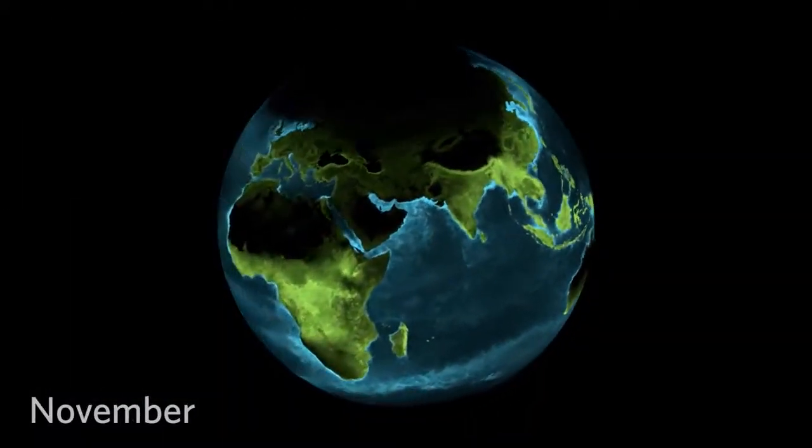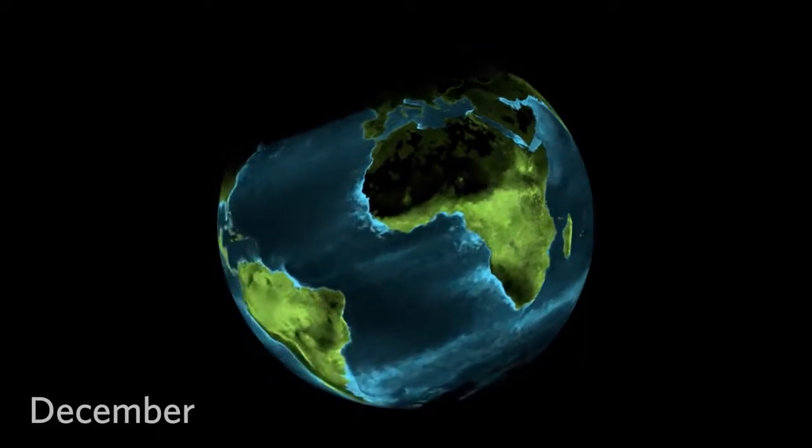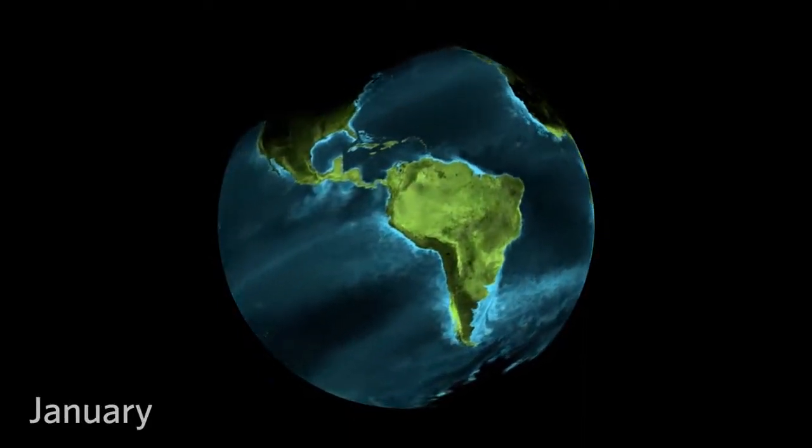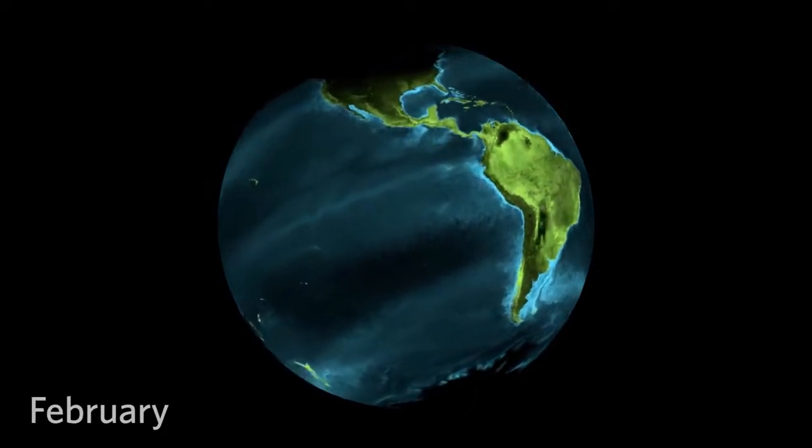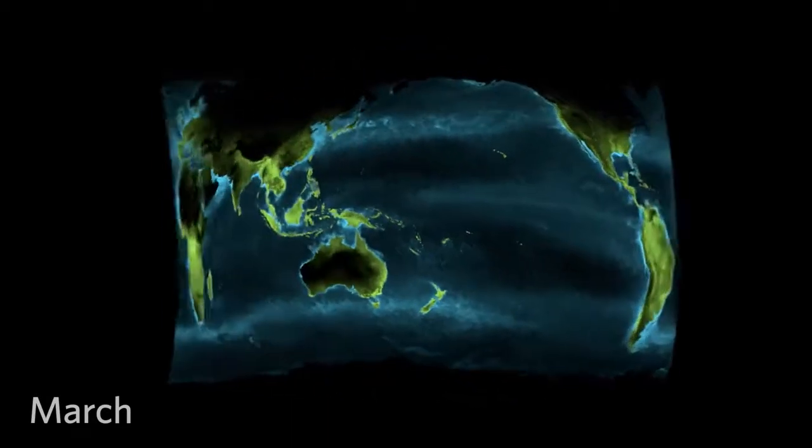Earth orbiting satellites measure the amount of carbon dioxide absorbed by these primary producers. Bright regions on this map show where they devour the most carbon dioxide, turning light from the Sun into oxygen and natural sugars.